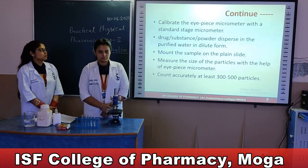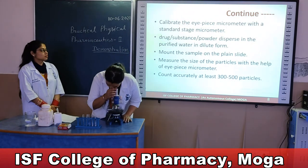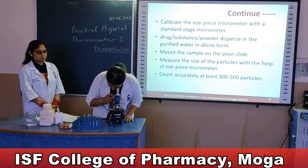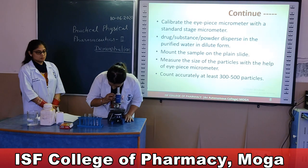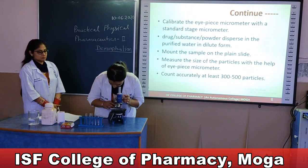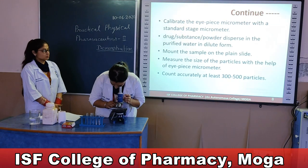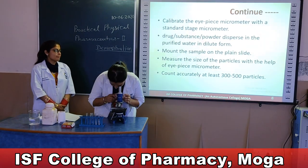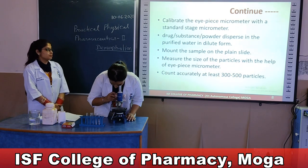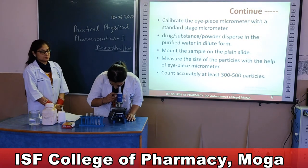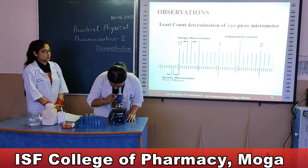The method involves: clean the glassware and disperse the drug substance powder for the sample. Clean the microscope and place it in the proper place. Fix the eyepiece micrometer (ocular micrometer) in the microscope. Calibrate the eyepiece micrometer with the standard stage micrometer. Disperse the drug substance powder in purified water in dilute form. Mount the sample on the plane slide. Measure the size of particles with the help of the eyepiece micrometer. Count accurately at least 300 to 500 particles for the accuracy of average particle size.